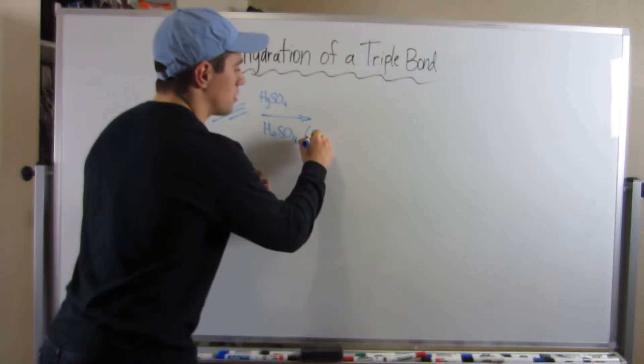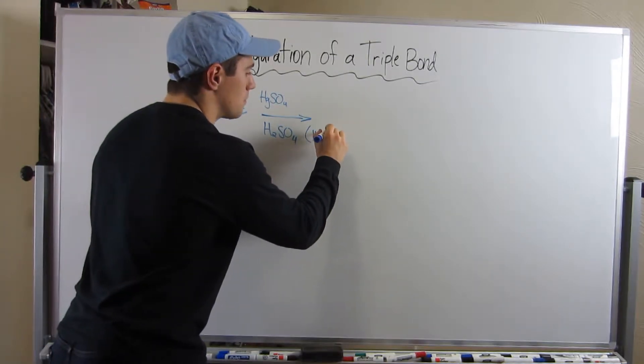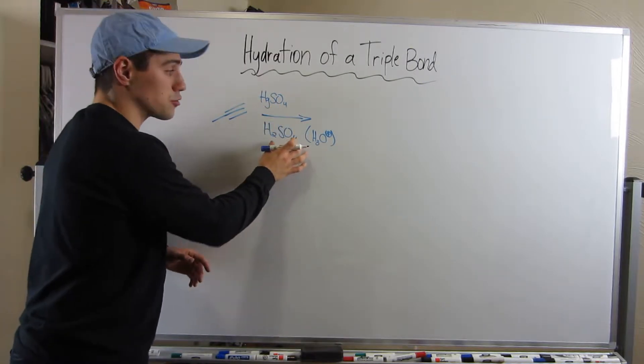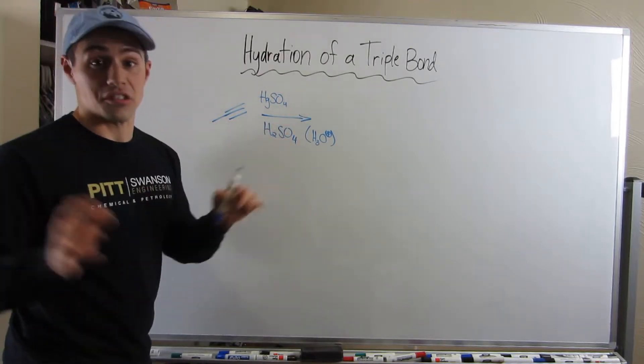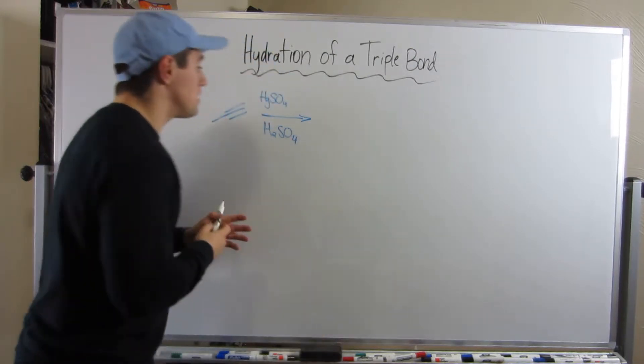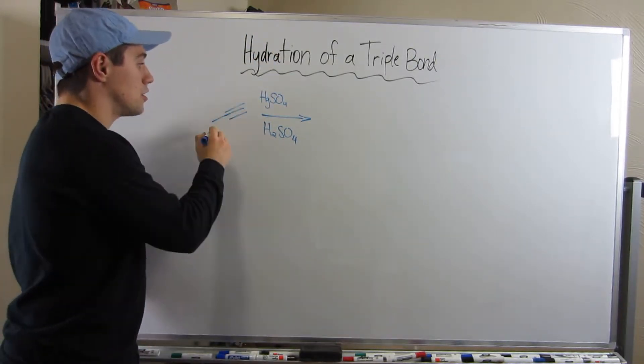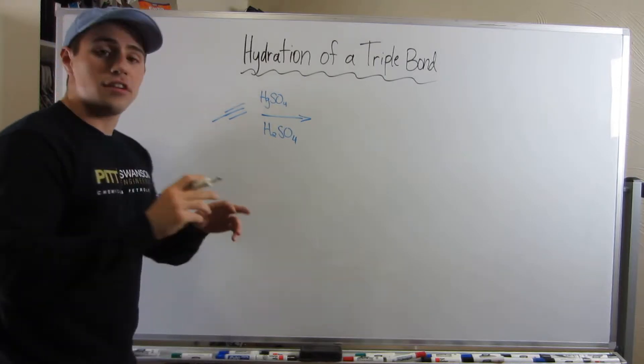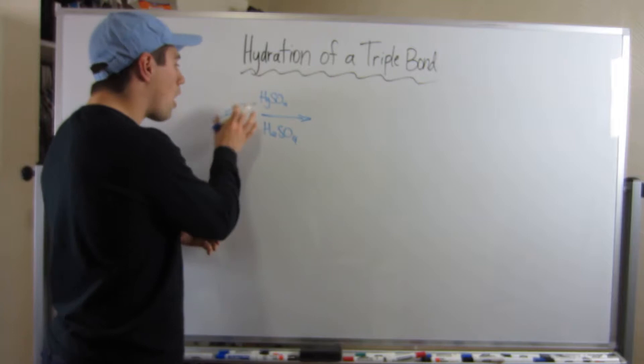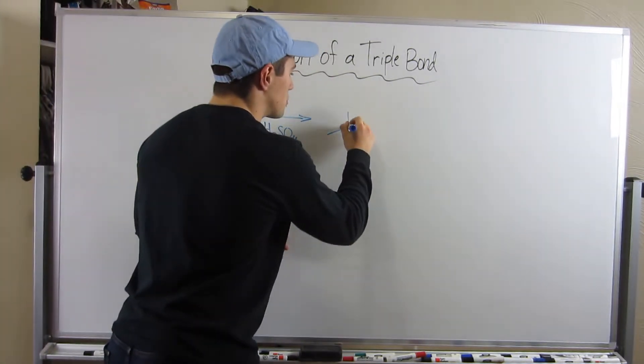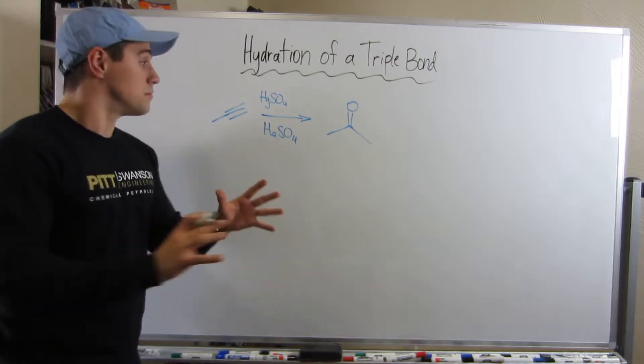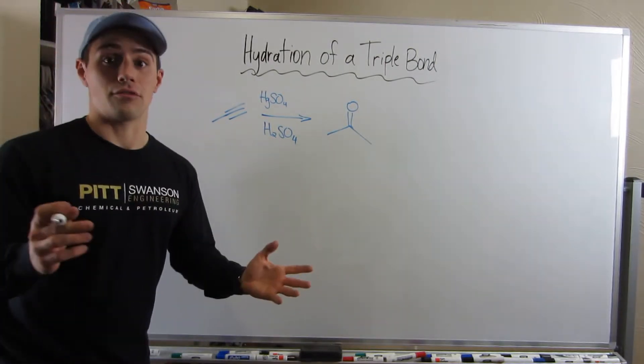You're gonna see mercuric sulfate and you'll usually see H2SO4, some acid. Maybe instead of H2SO4 you see H3O+, whatever it may be. You're gonna see mercuric sulfate and a strong acid or just the presence of acid. So what happens here is you actually take your triple bond and, kind of in a Markovnikov fashion, you add water to this and you actually get a carbonyl.